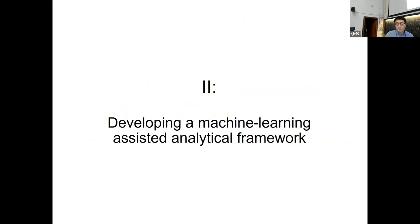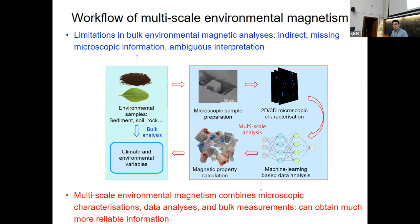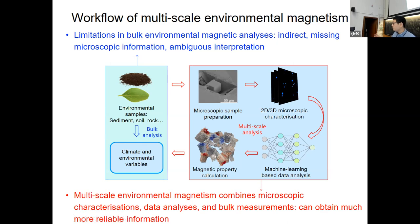The second part is about some of our direct development of analytical methods. In typical environmental magnetism, we start with a natural sample, which is often very dirty, measure some magnetic properties, and come up with some interpretations. Quite often the microscopy analysis is skipped. I think it's very important that for at least some typical samples, we should do the microscopic characterizations.